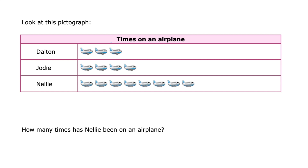Today we're going to talk about pictographs. A pictograph is a graph that shows its data using little pictures, and you're going to be making a pictograph this week, but it doesn't need to have perfect pictures. In the illustrations I'm going to be showing you, they might have fancy airplanes, but yours could just be a simple picture.